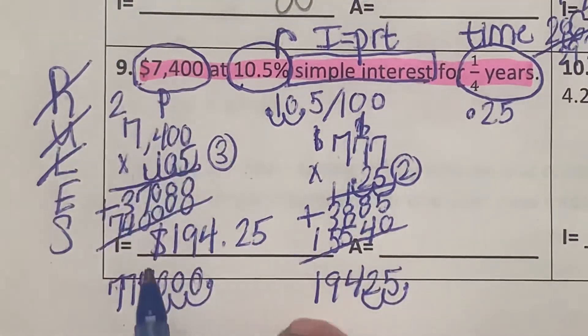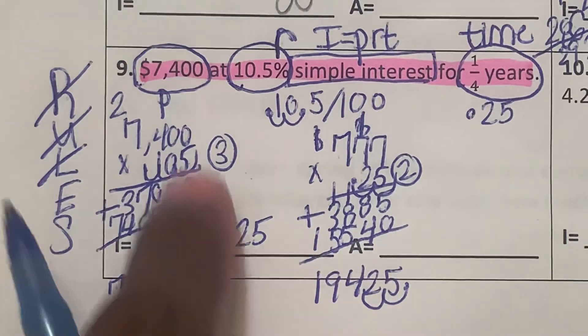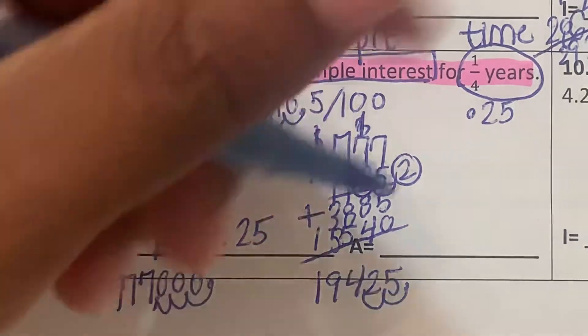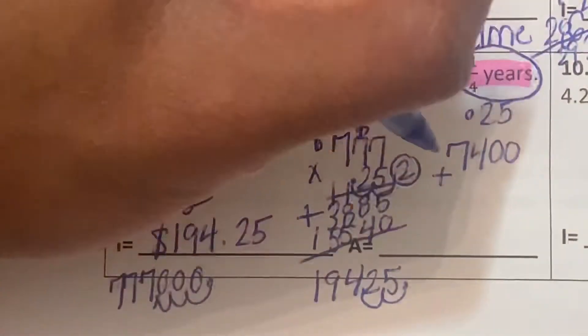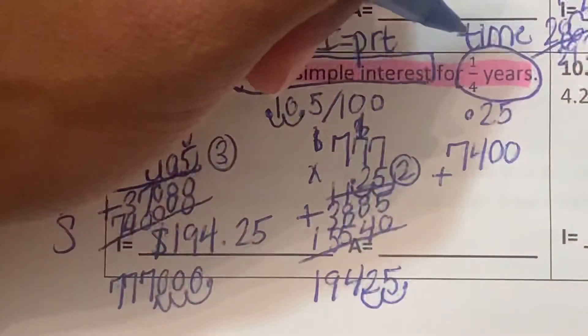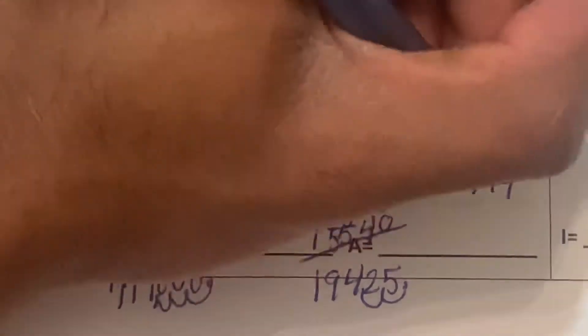Now the total amount in the account will be the $7,400 plus $194.25. Let's add these up. 0 plus 5 is 5. 0 plus 2 is 2. 0 plus 4 is 4. 0 plus 9 is 9. 0 plus 9 is 9. 4 plus 1 is 5. Bring the 7 down.